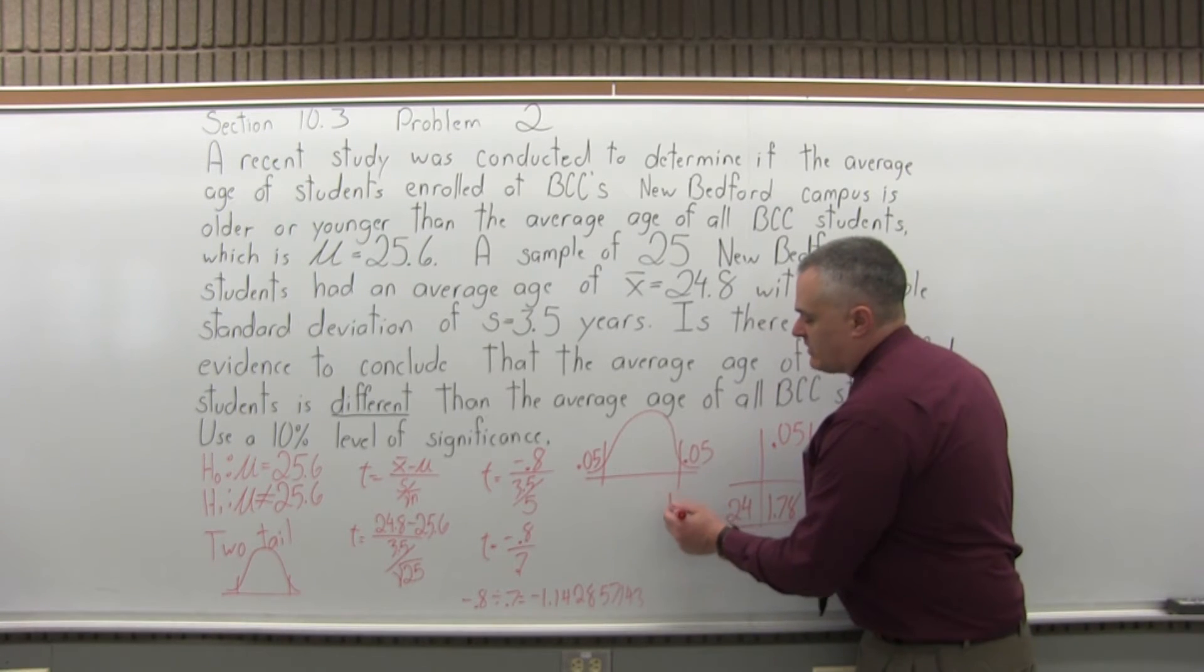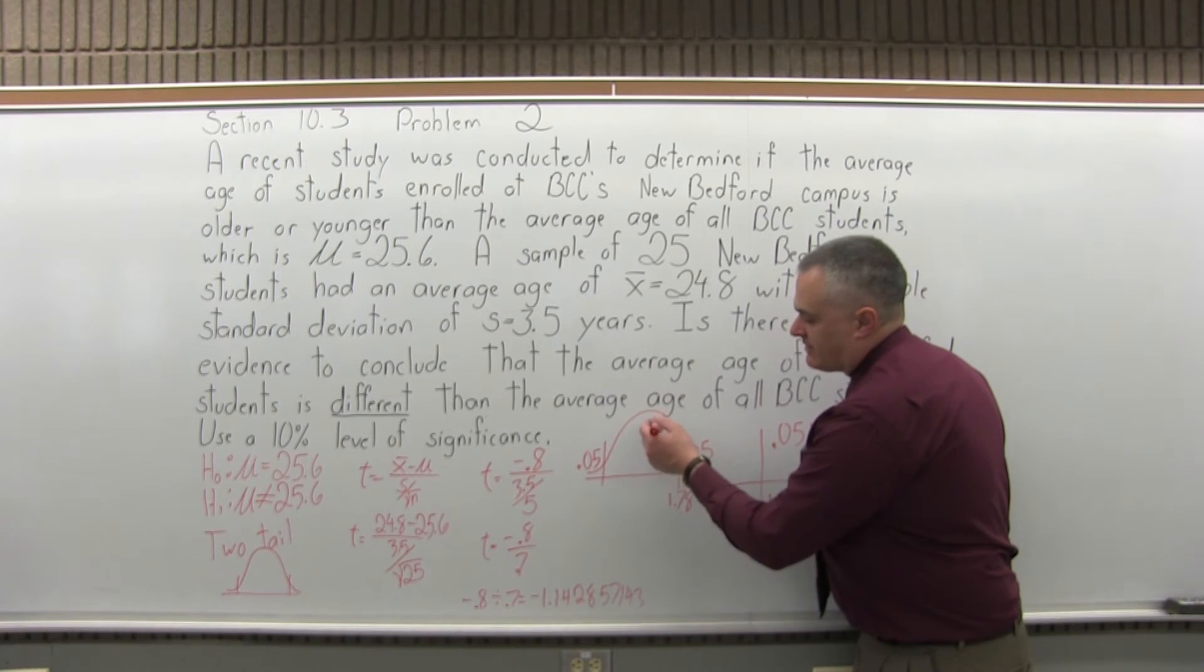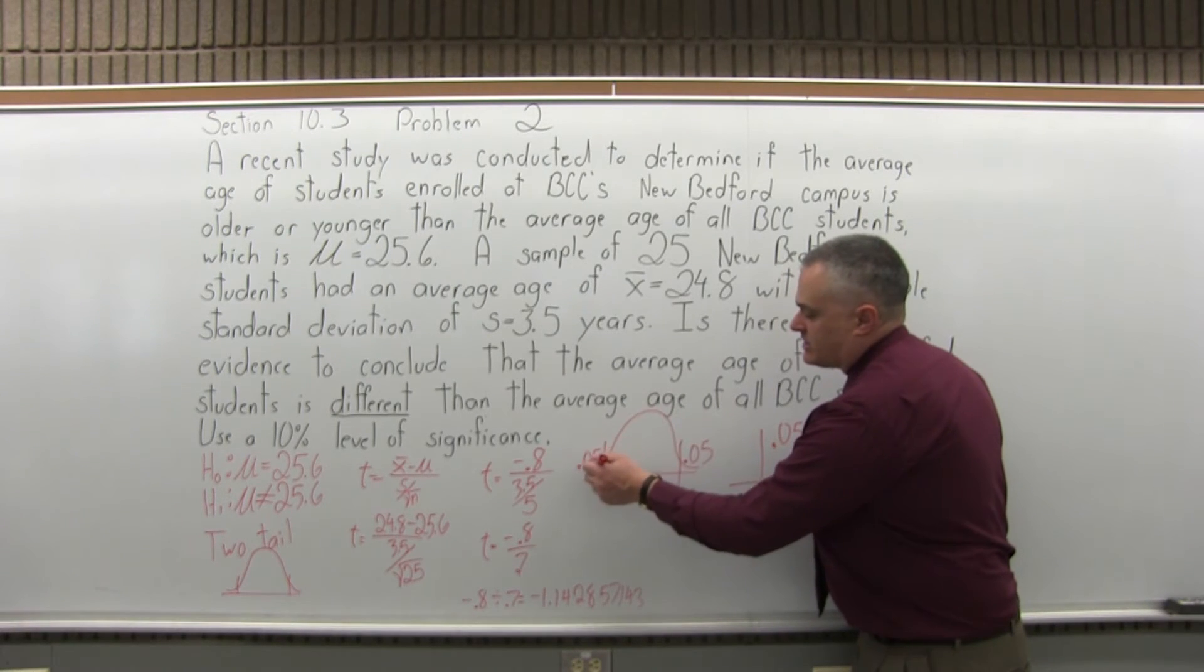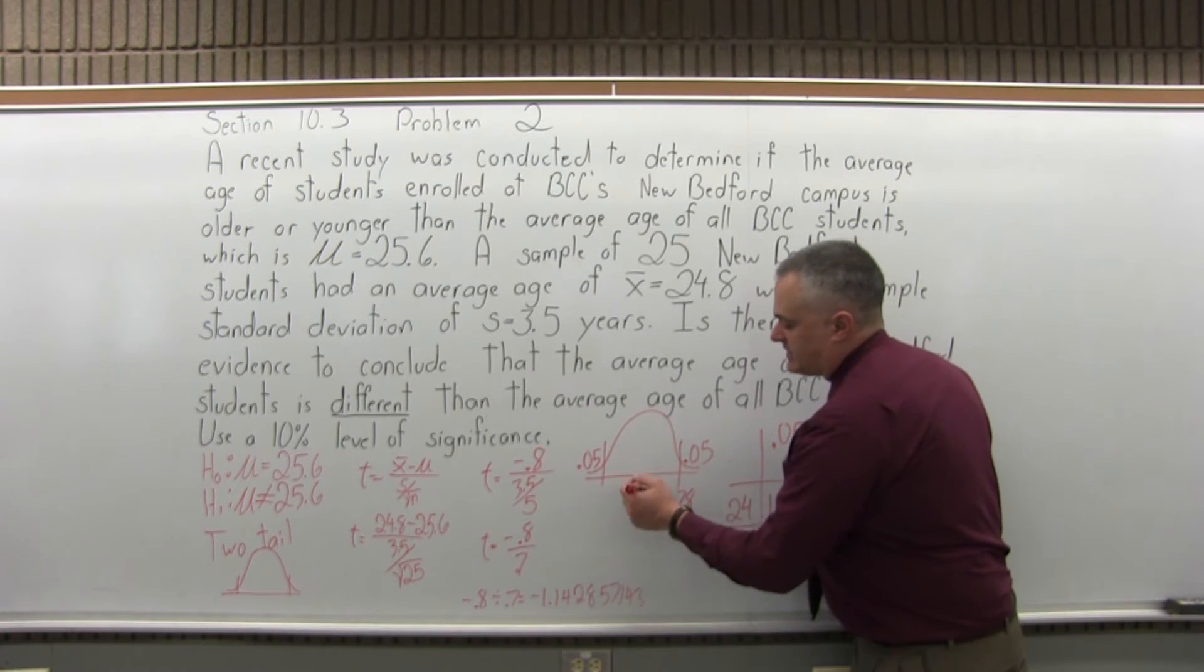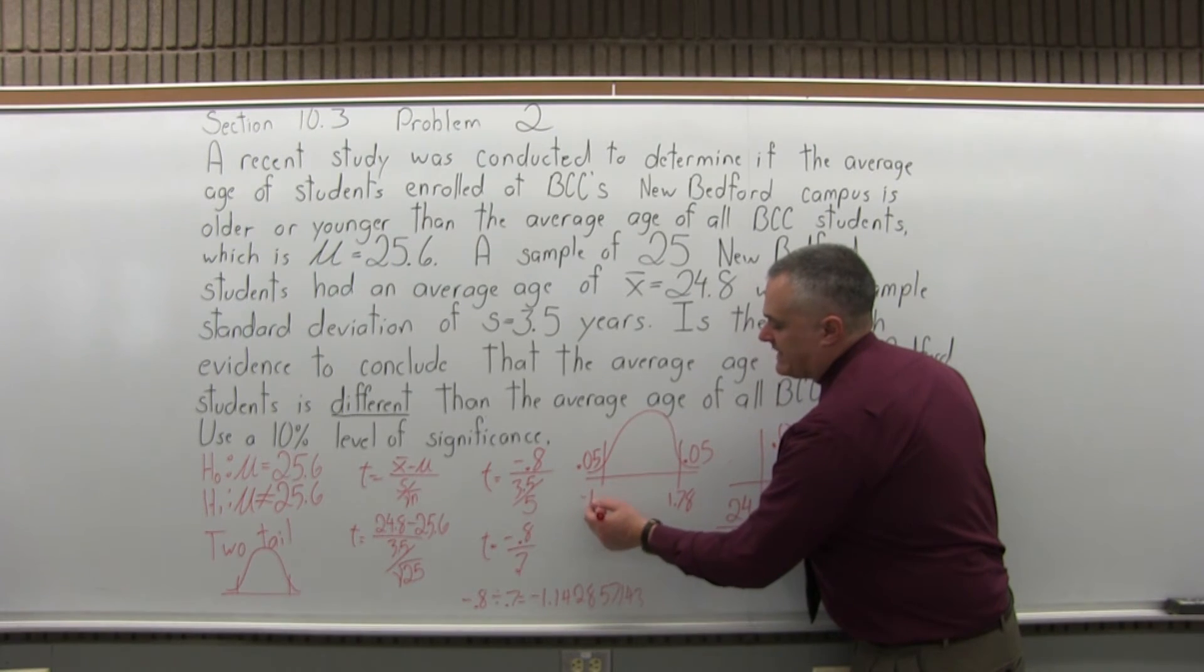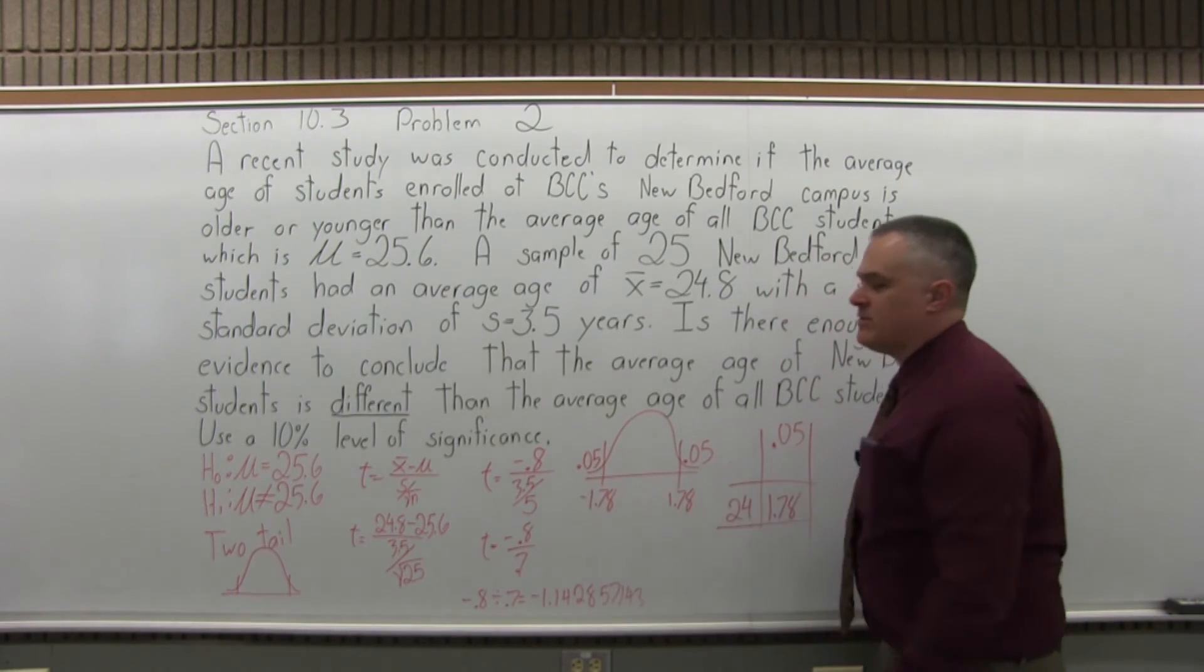Now that 1.78 you get is the positive on the right end. And the t thing, which is like the z, the standard normal, is symmetric. So the left end would be negative 1.78, same number but negative.